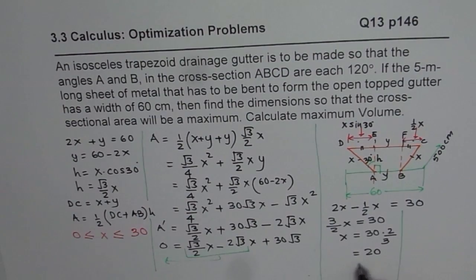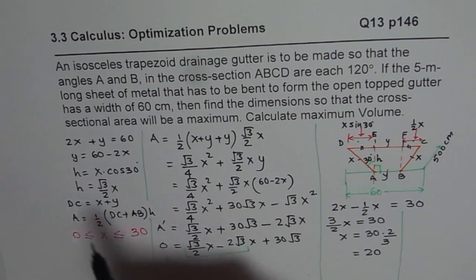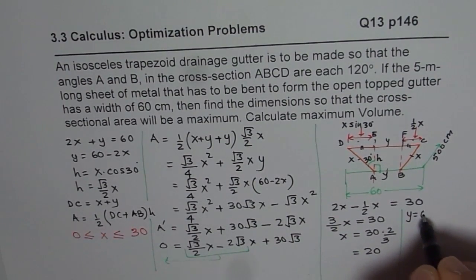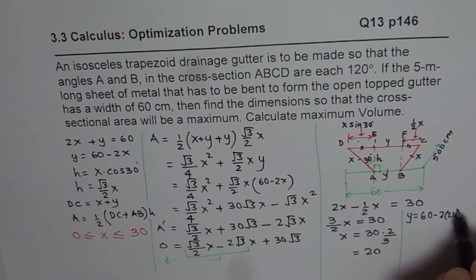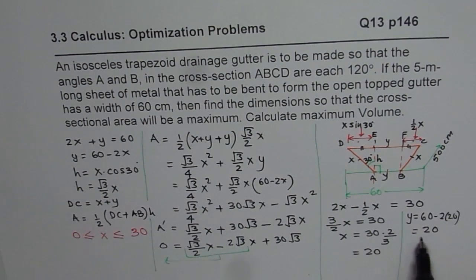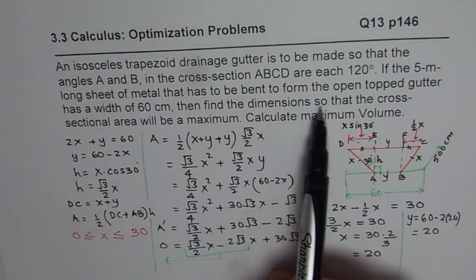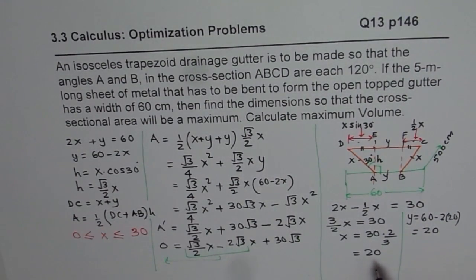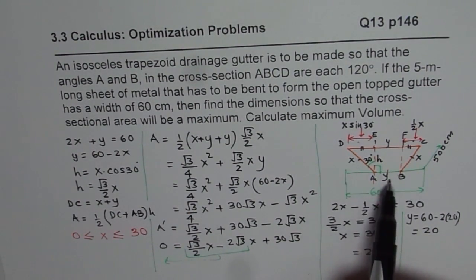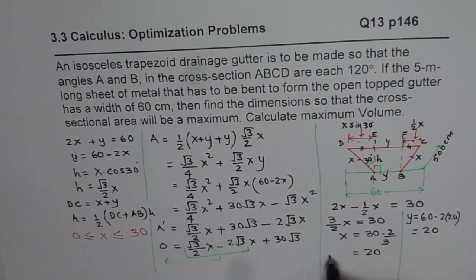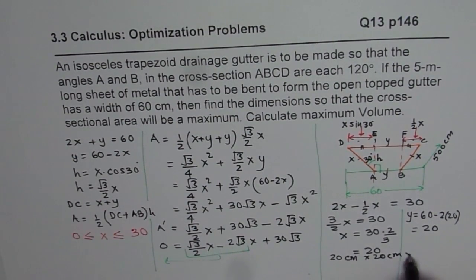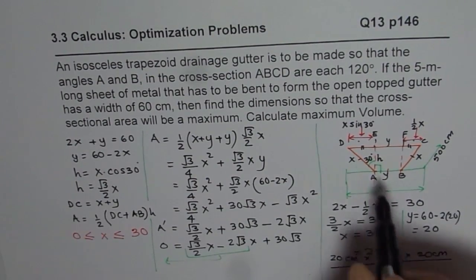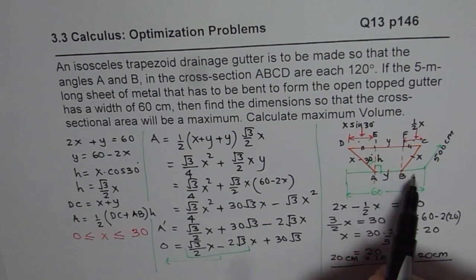Since X equals 20 and Y equals 60 minus 2X, we get Y equals 60 minus 40, which equals 20. So Y equals 20 centimeters as well. All three sides — DA, AB, and BC — are each 20 centimeters. So the dimensions of the trough are 20 cm by 20 cm by 20 cm.